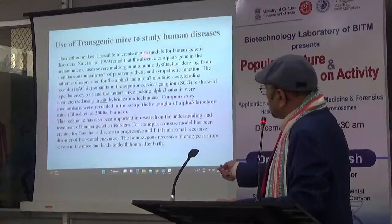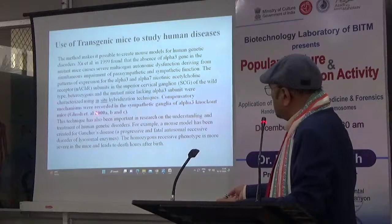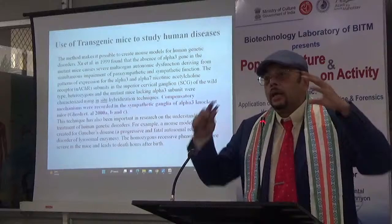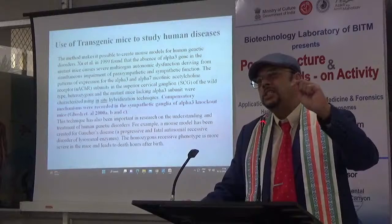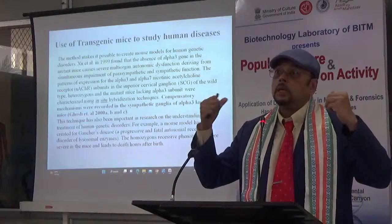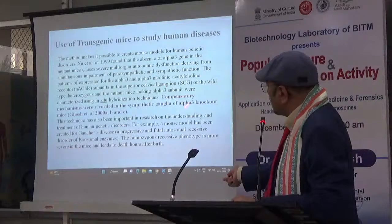I worked on the alpha-3 gene and a compensatory mechanism recorded with the sympathetic ganglia of alpha-3 knockout mice. Basically, we have ganglia where a number of nerves get together. When one gene is muted or not working, interestingly, another gene started working more — just like a person who cannot see develops enhanced hearing ability. The same kind of compensatory mechanism happens in the genetic world. One gene is not working, the other compensates. We were the first in the world to report this, and we had three publications on the topic.